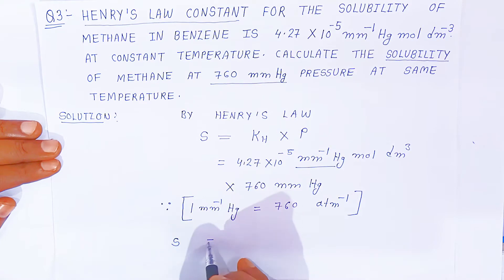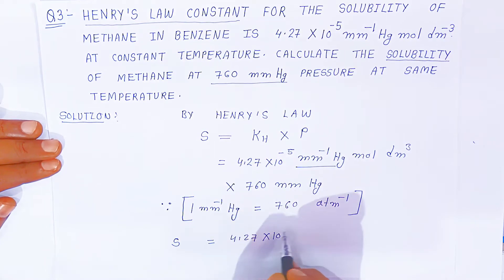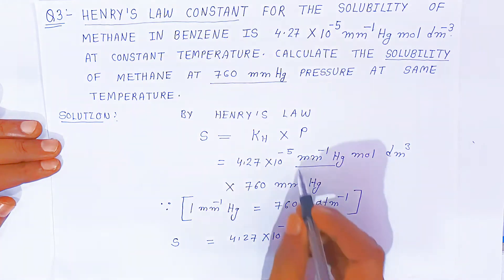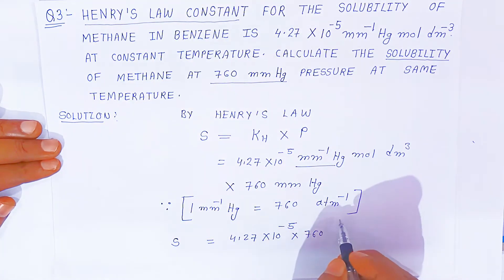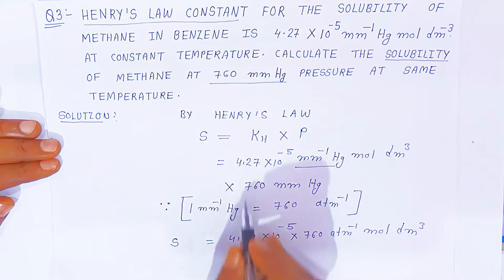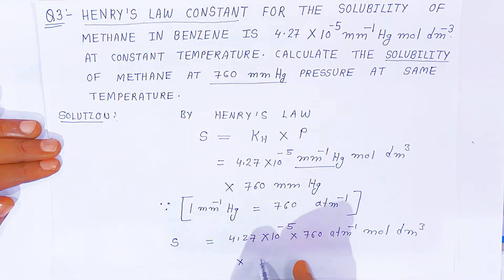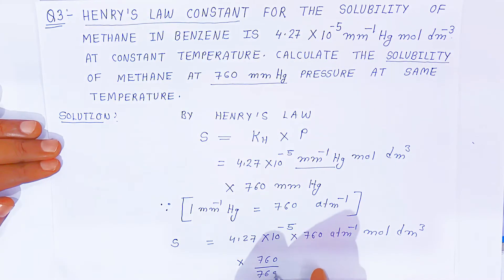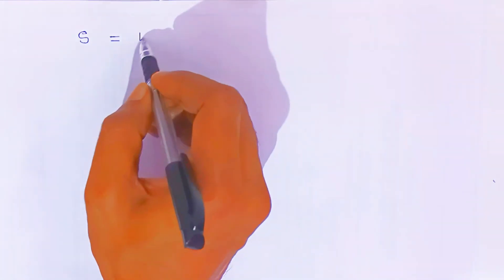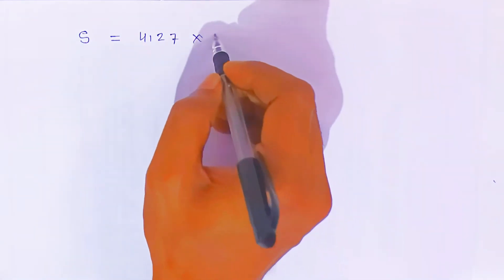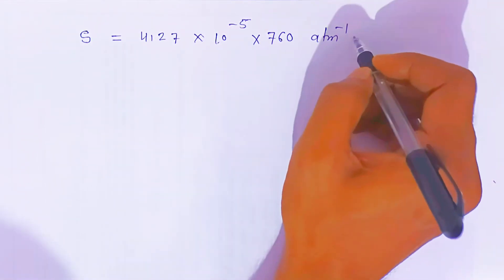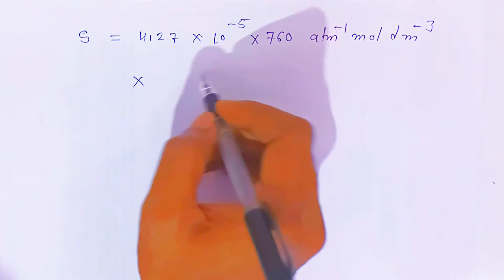So this will be equal to 4.27 × 10⁻⁵. You have to convert to per atmosphere by multiplying with 760 per atmosphere mole per dm³. And since we are converting to atmosphere, you have to divide by 760. So 760 divided by 760 gives 1 atmosphere.